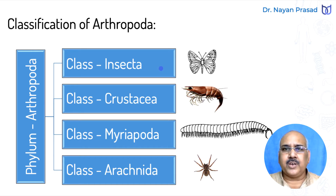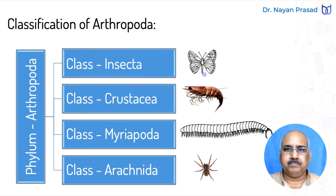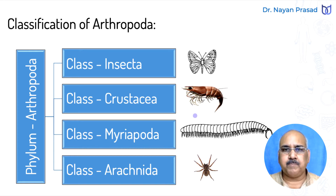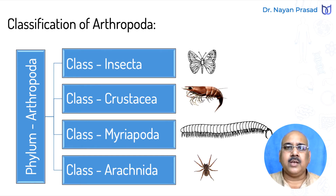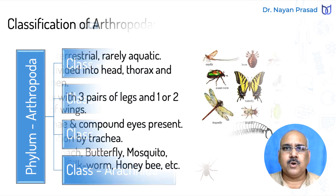The example of Insecta, shown in the diagram here, is the butterfly — this is the major group of Arthropoda. Crustacea includes prawn and crab-like creatures. Myriapoda includes millipede and centipede, while class Arachnida includes spider and scorpion. Let us see the characters of these different groups one by one.